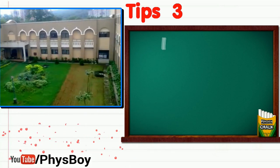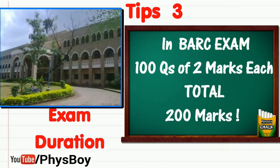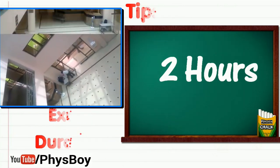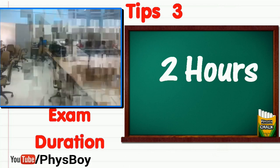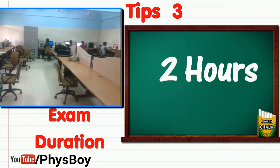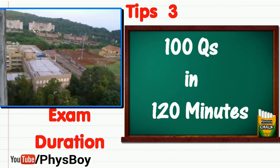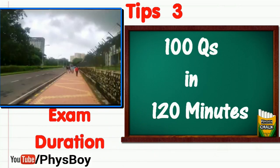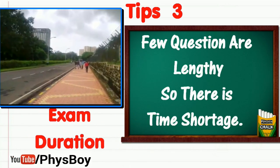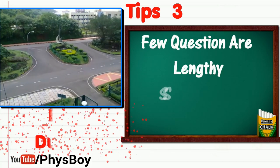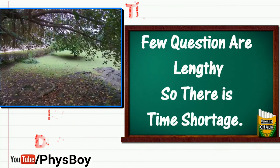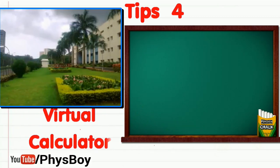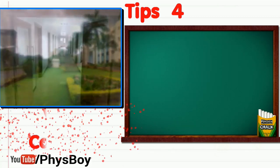Tip number three: exam duration. The BARC exam comprises 100 questions of 2 marks each with a stipulated time frame of 2 hours. The exam is conducted in 2 or 3 shifts depending on the number of candidates in each branch. You have to attempt 100 questions in 120 minutes. Among them, a few questions will be of numerical type, which take more time than conceptual questions, so you have to answer each question in a very short time.